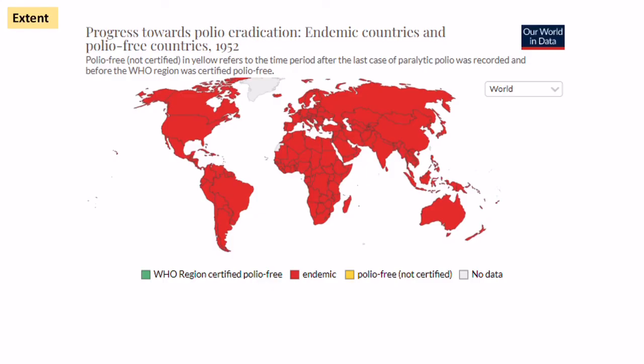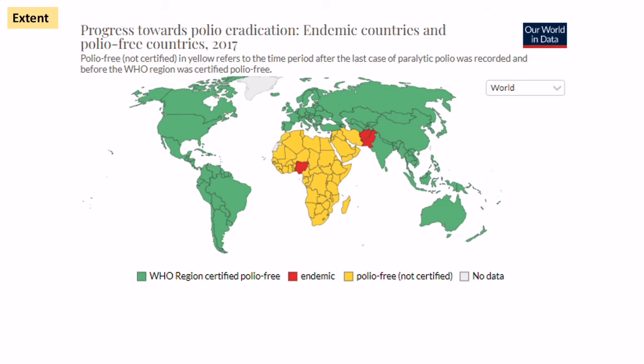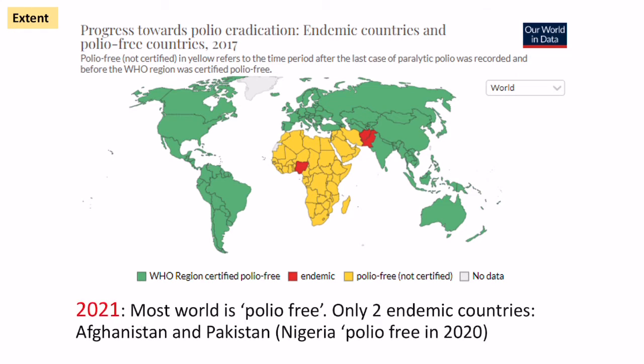Back in the 1950s, polio was at pandemic level — all countries were endemic and it killed or paralyzed nearly 600,000 people a year. By 2021, due to a huge campaign, most of the world is polio free, but there are two endemic countries: Afghanistan and Pakistan. Nigeria was endemic until recently, becoming polio free in 2020.